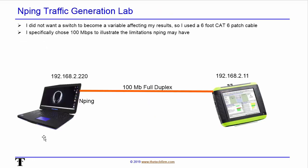The lab setup is simple: a laptop connected to an OptiView over a 100 meg full duplex link, statically set between the two devices. I don't want auto-detection because that may cause other issues. There's no switch, because a switch may add latency and introduce unwanted variables. Just a simple six-foot Cat 6 patch cable.